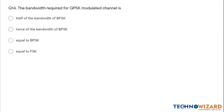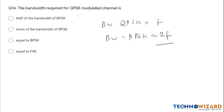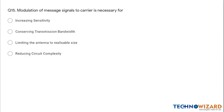Question 14: The bandwidth required for a QPSK modulated channel — bandwidth for QPSK is F, and bandwidth for BPSK is 2F. Therefore the bandwidth of a QPSK modulated channel is half the bandwidth of BPSK. Option A is the correct answer. Question 15 (last): Modulation of a message signal onto a carrier is necessary for limiting the antenna to a realizable size. Option C is the correct answer.